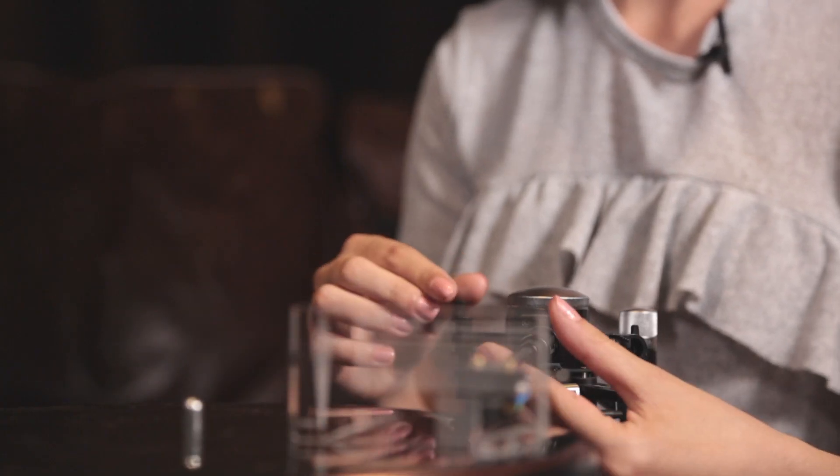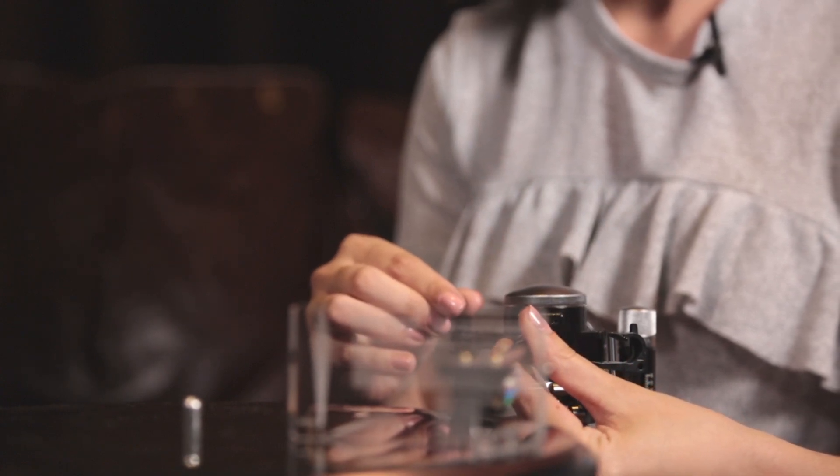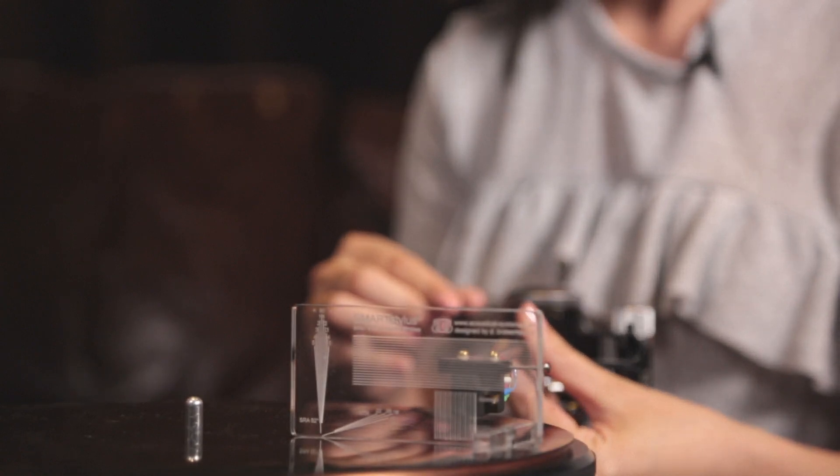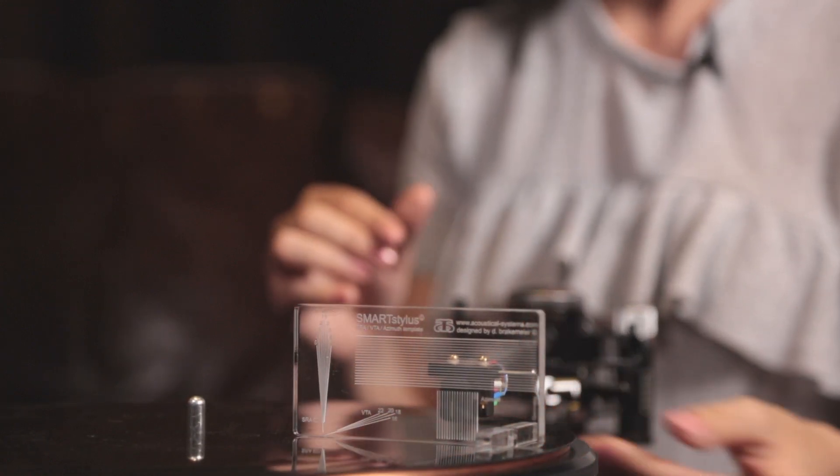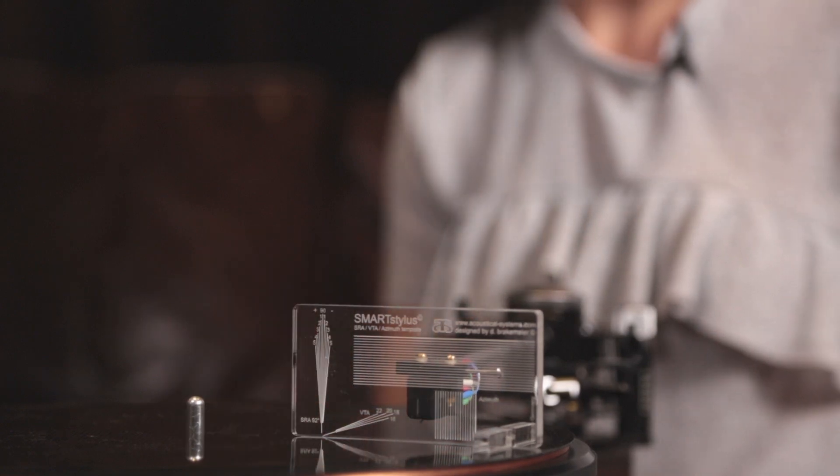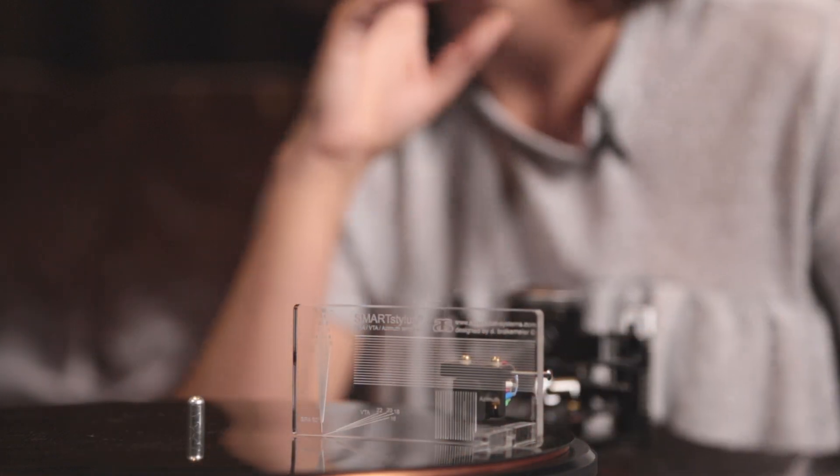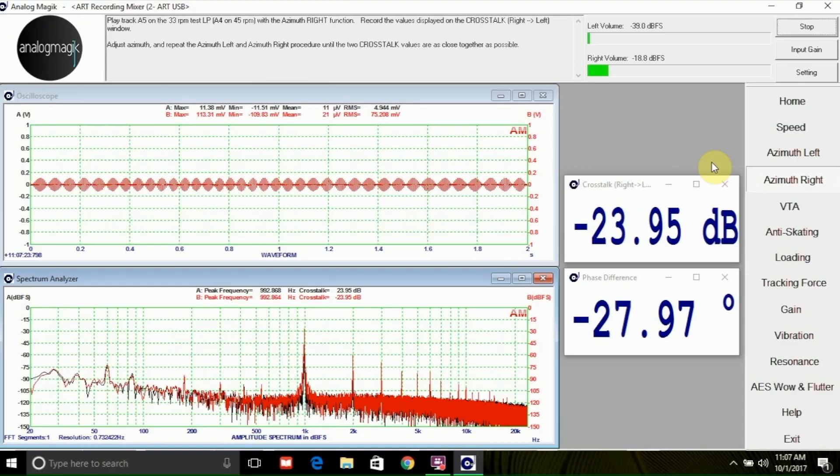If the left is greater than the right channel, twist the cartridge slightly by approximately one degree and repeat the measurement or vice versa for the other direction. An optimal azimuth setting is achieved when the difference between the left and the right crosstalk numbers are as close together as possible. You may have to go back and forth a few times to find the right azimuth setting.